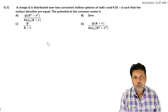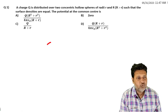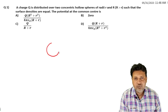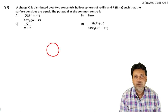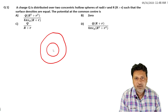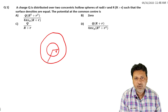Let's look at this problem. We have two concentric hollow spheres — the inner sphere has radius r (small r) and the outer sphere has radius capital R.